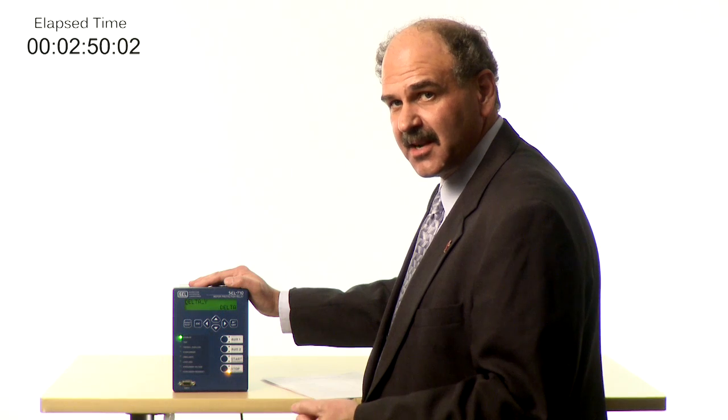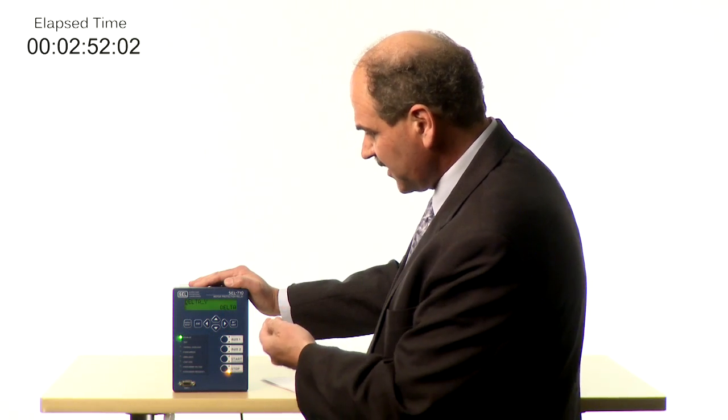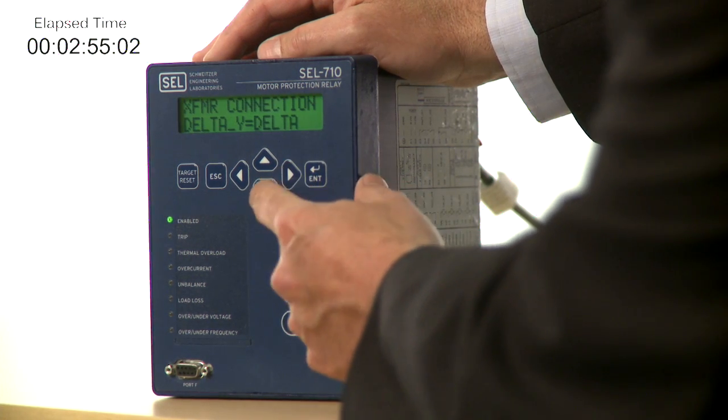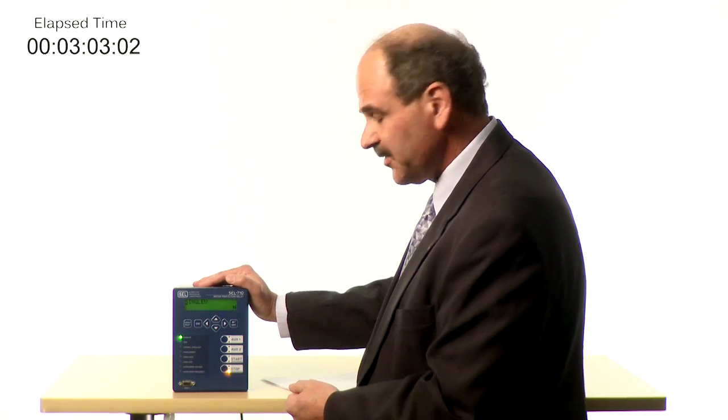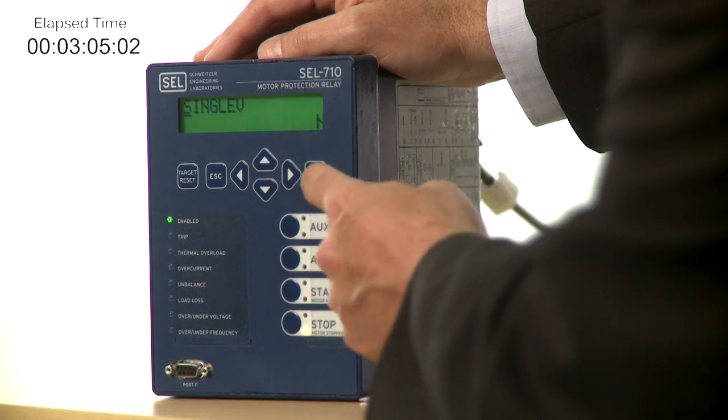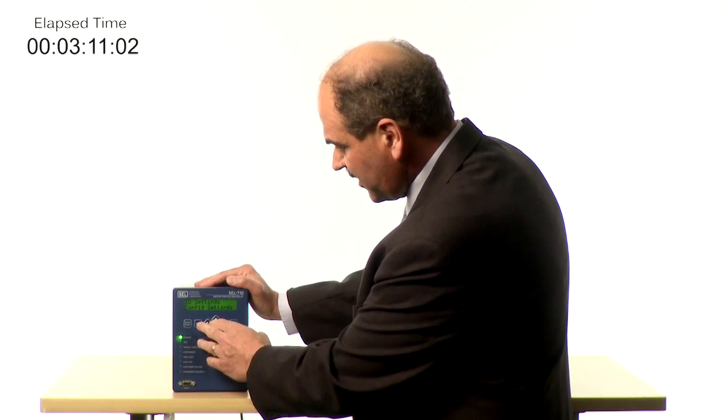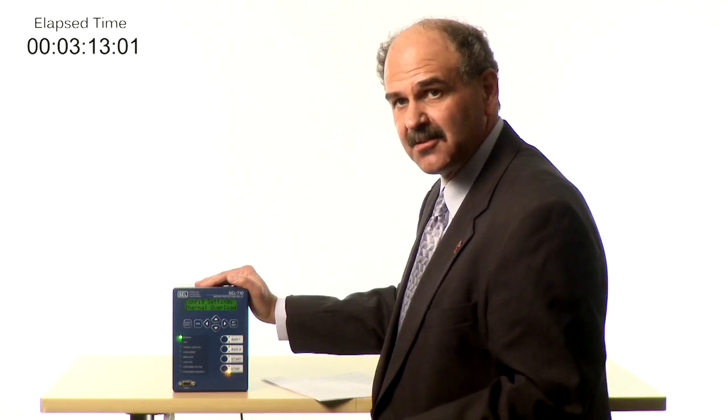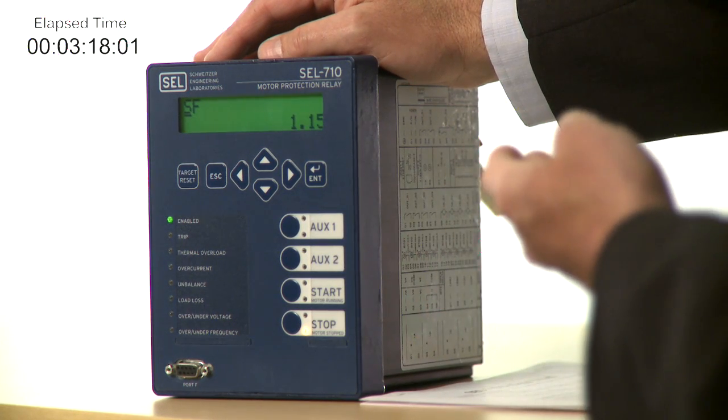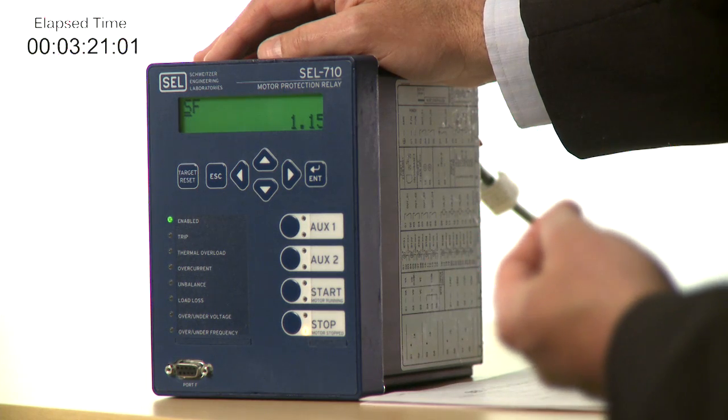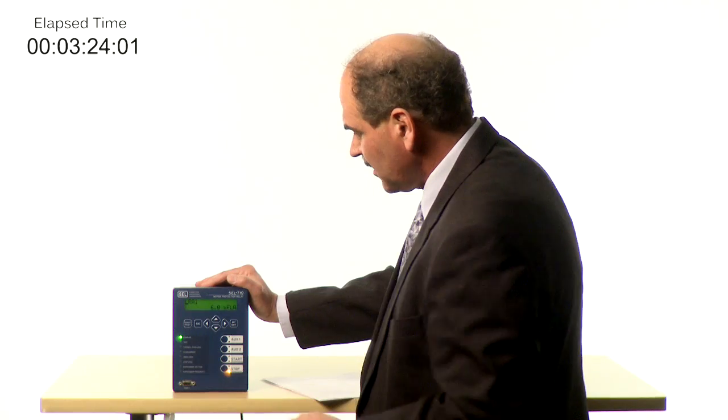And we have a wye connection for our motor, so I'm going to change the delta Y setting to Y. And this also has an option for a single voltage, but we have three voltages, so we leave the single voltage set at no. So now we're back to where we started on the CT ratio. So we'll move back out of this menu and move down and set the thermal overload settings, which include the service factor. The default is 1.15, and our motor is also 1.15, so no change is necessary.